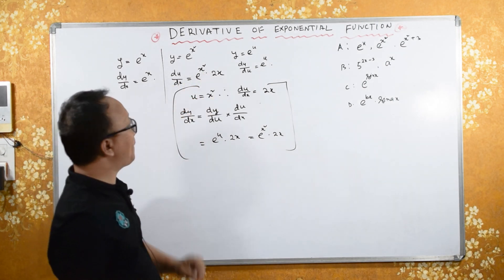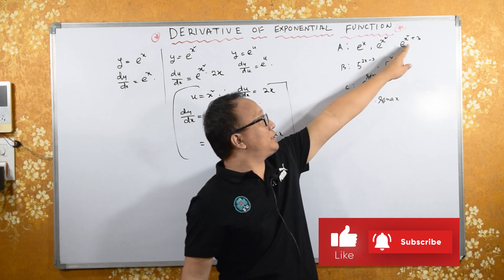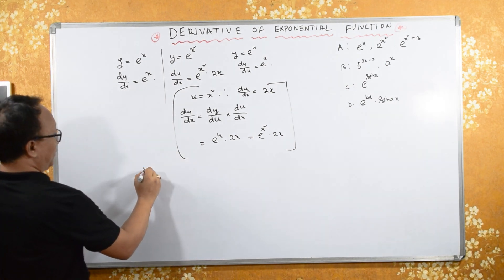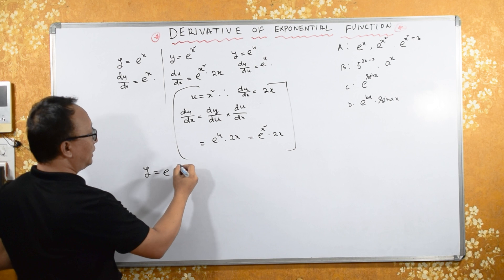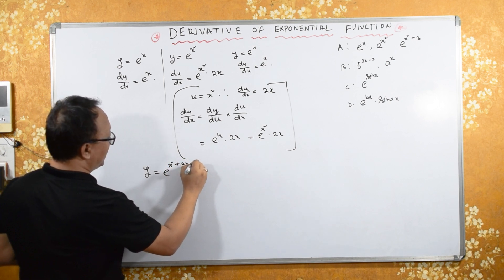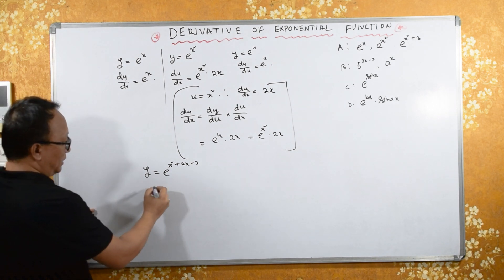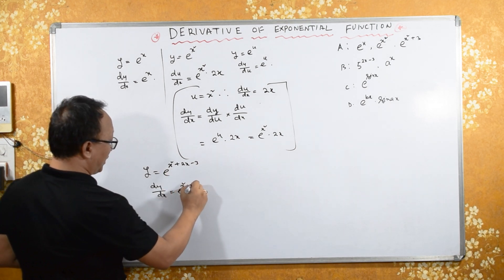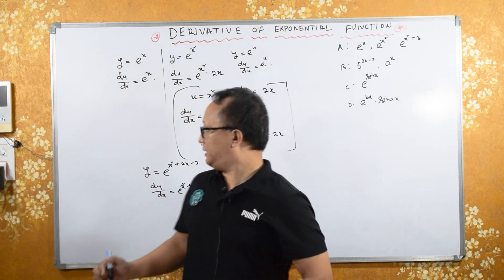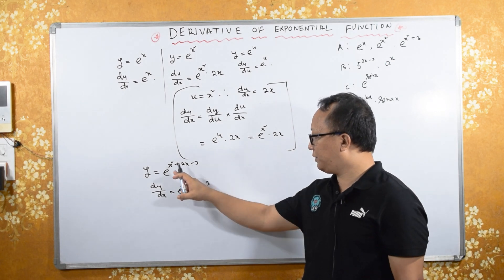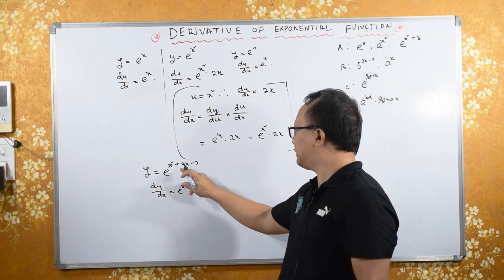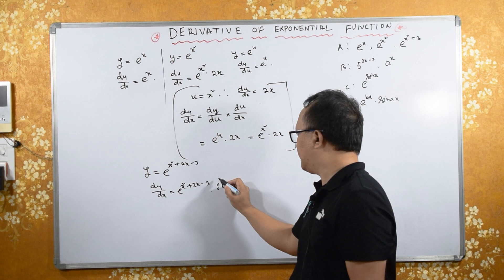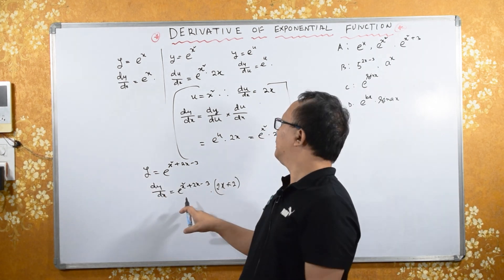Now, if y equals e raised to any algebraic function — for example x squared plus 2x minus 3 — then dy/dx will be: keep e raised to (x squared plus 2x minus 3) as it is, then differentiate the exponent with respect to x. Differentiating x squared gives 2x, d/dx of 2x is 2, and the constant term gives 0, so dy/dx is e raised to (x squared plus 2x minus 3) into (2x plus 2).